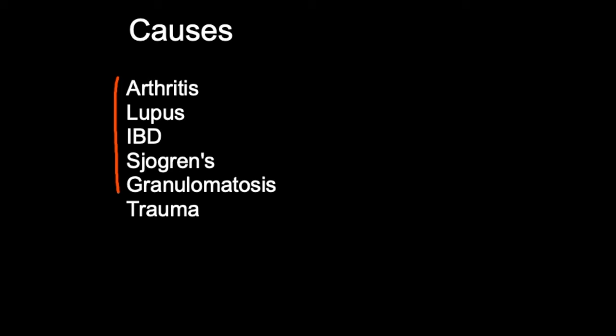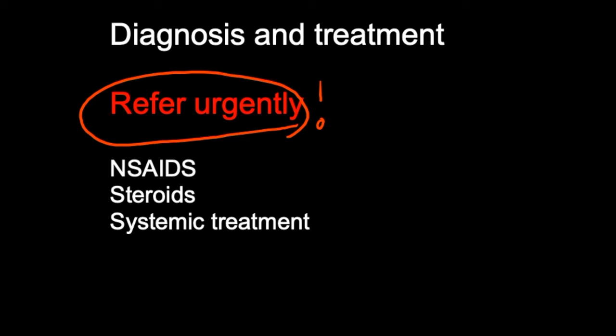The ophthalmologist may also get a series of bloods on the patient, depending on clinical judgment. In terms of treatment, scleritis needs to be treated as soon as possible. Treatment options include non-steroidal anti-inflammatories, such as ibuprofen, to control pain and inflammation. If a patient has gastric disease or gastric ulcers, you need to be careful when giving NSAIDs and may want to cover them with gastric protection.